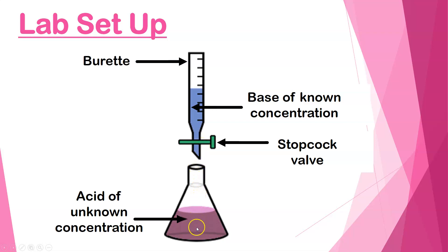You slowly open the valve, let a little bit of the base in, it reacts, and you see if the color changes. If not, you add a little bit more base, a little bit more, a little bit more, until you see the color change. There are specific techniques you have to have: you have to be able to turn the valve very slowly and add just a drop at a time, know how to fill your burette so you don't get air bubbles, know how to read the markings on the burette, and know how to swirl your flask to make sure everything mixes. We'll walk you through all the hands-on technique.